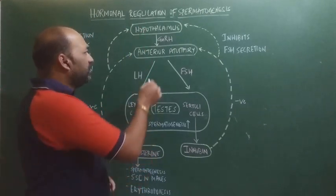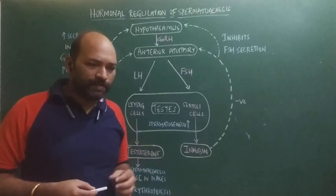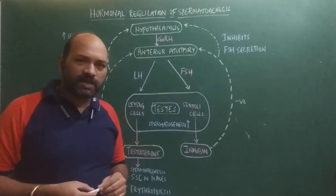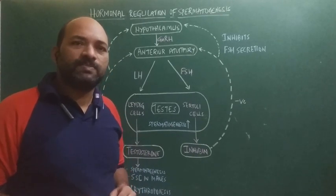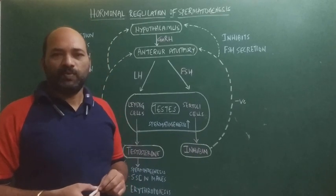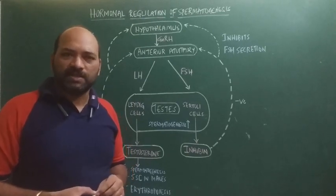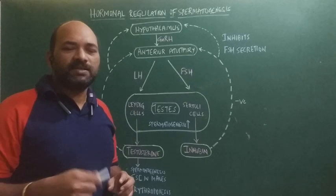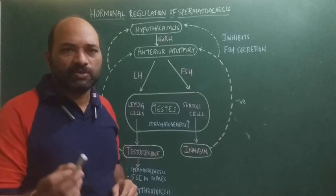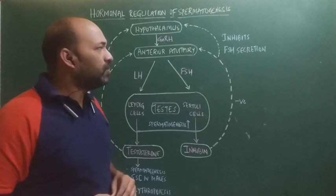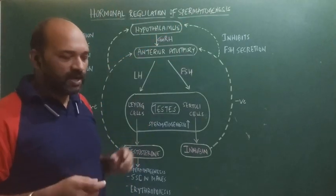The pituitary is divided into three parts: the first is called pars distalis, the second is pars intermedia, and the last is pars nervosa. Pars distalis is responsible for secreting six different types of hormones, pars intermedia secretes a hormone, and pars nervosa only stores hormones.